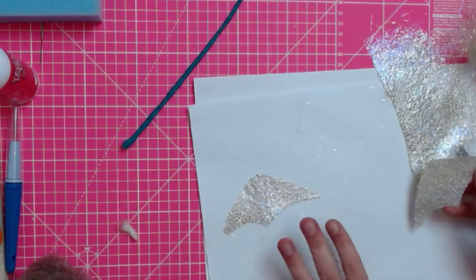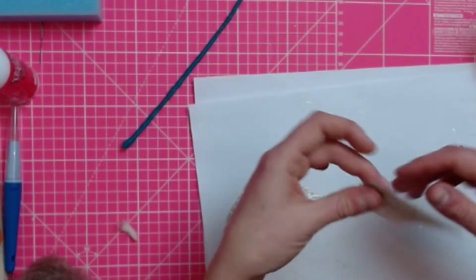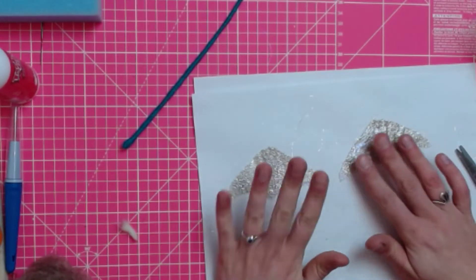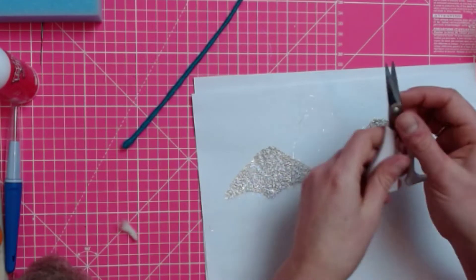So already I've got Angelina fiber everywhere. It's a sign that you're having fun. So I've cut out my Angelina fiber.